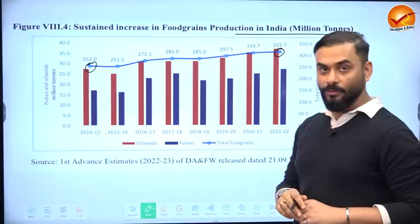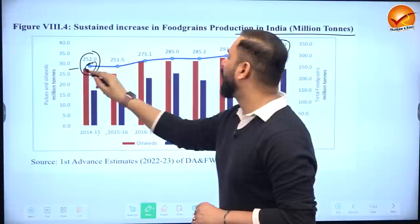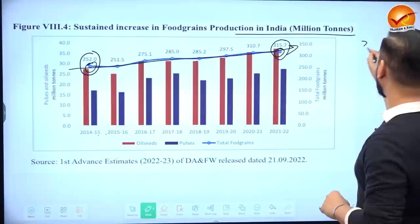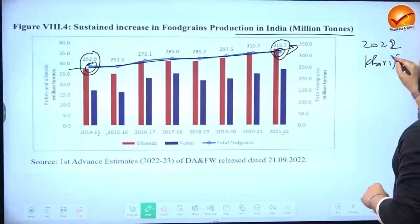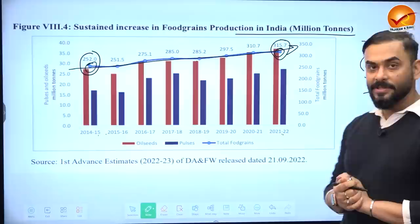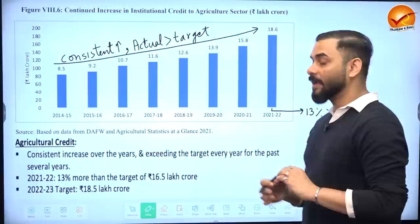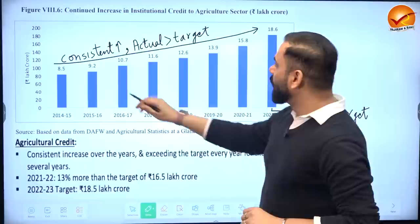Looking at overall food grain production: in 2014-15 it was 252 million tons, reaching 315 million tons recently — a clear upward trend. The economic survey states that the 2022 Kharif crop production is greater than the past five to six year average, though they focus only on Kharif here.